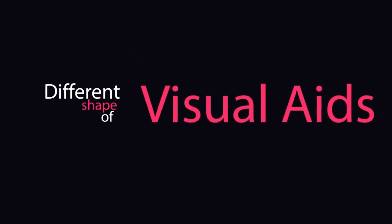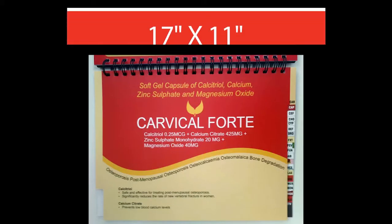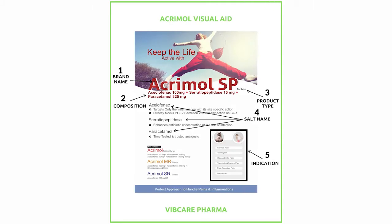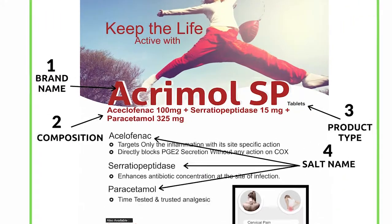Different shapes of pharma visual aid designs include 10 inch by 13 inch, 17 inch by 11 inch, and A4 pasted visual aid formats. We have indicated all the main points which should be in it, like brand name, composition, product type, salt name, and indication.